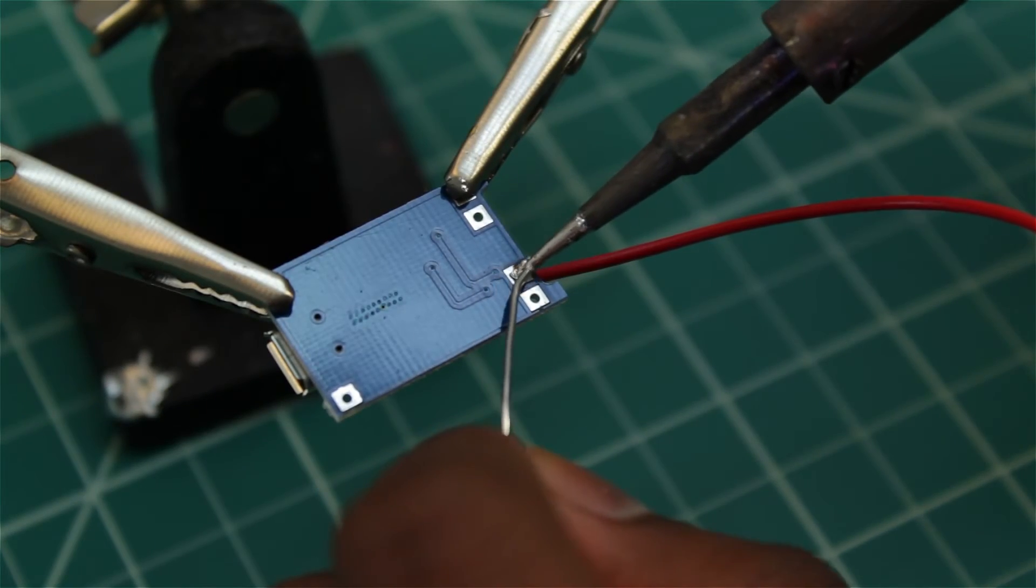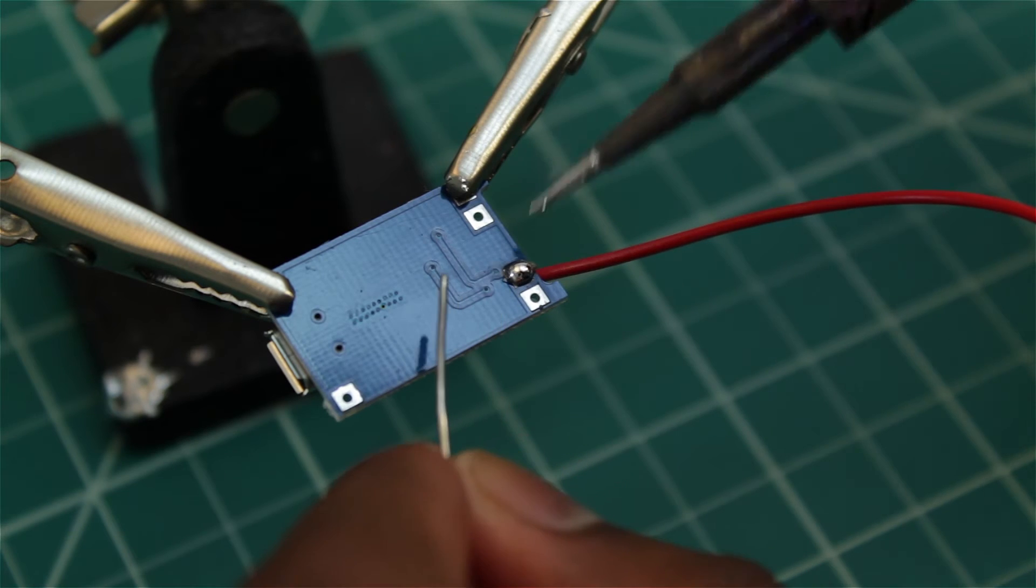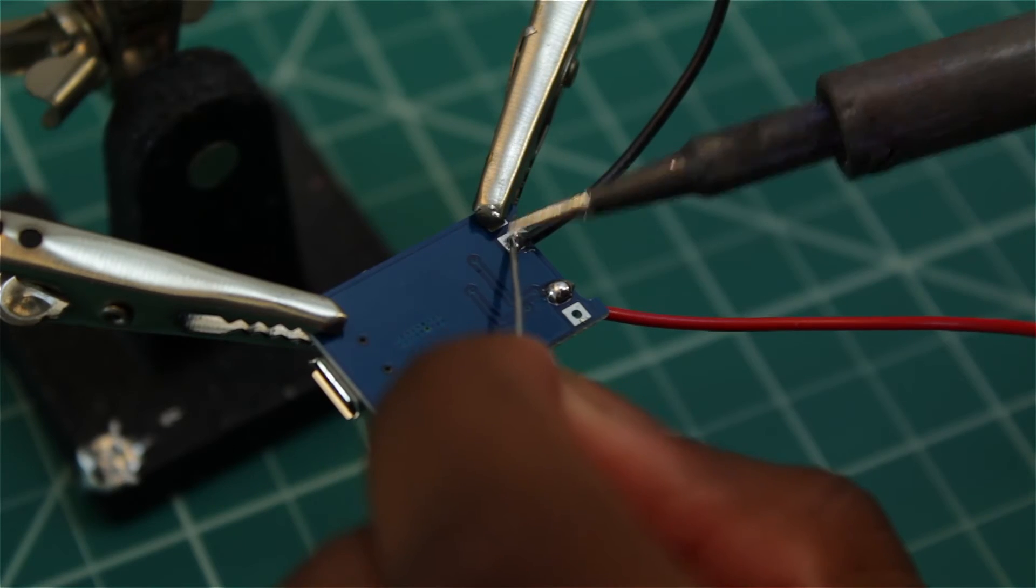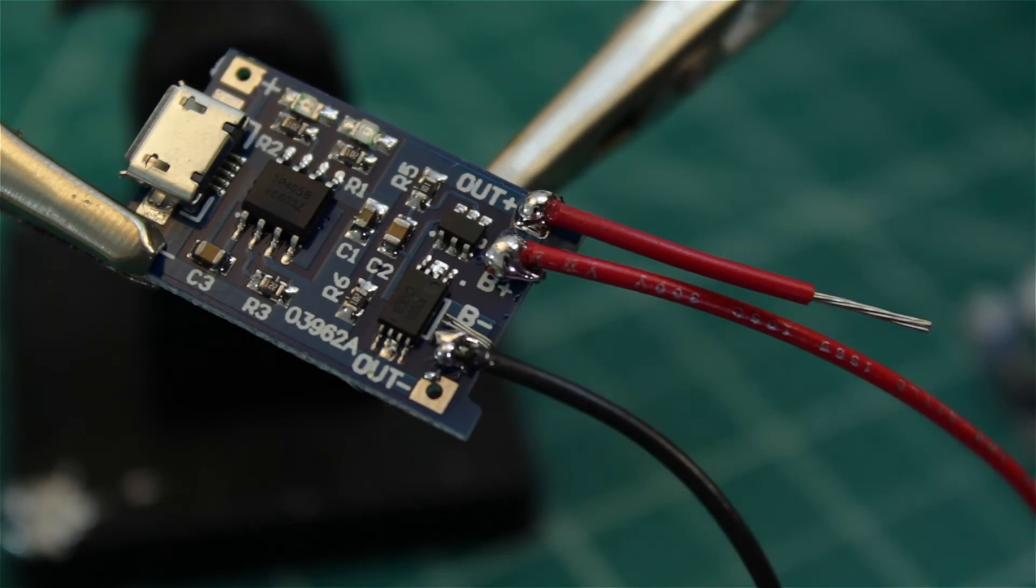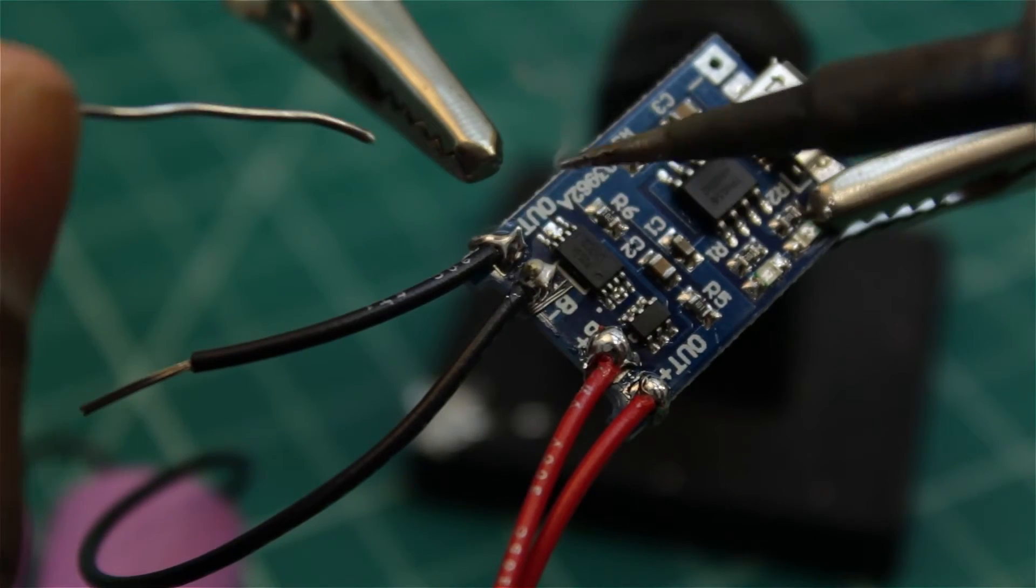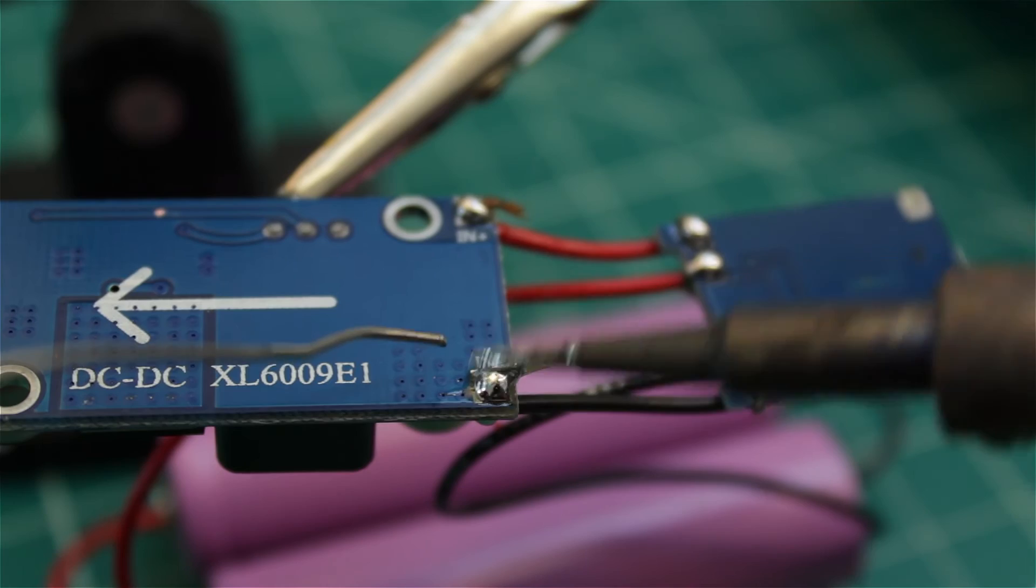Solder the positive end to the battery plus pin of the TP4056 and the negative to the negative. Plug the TP4056 in if you want to verify that it's working. Otherwise, just solder the output of the TP4056 to the inputs of the boost converter.